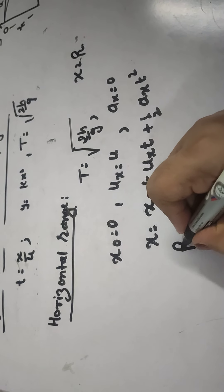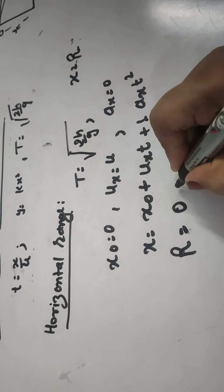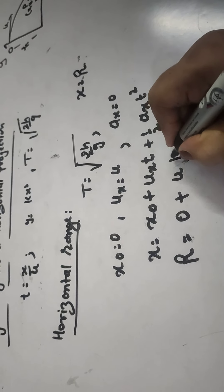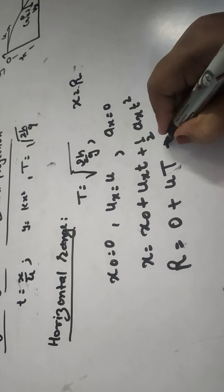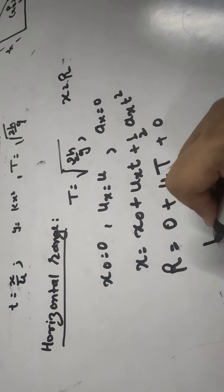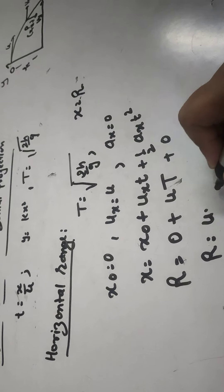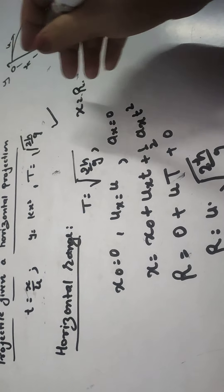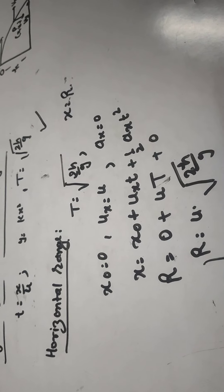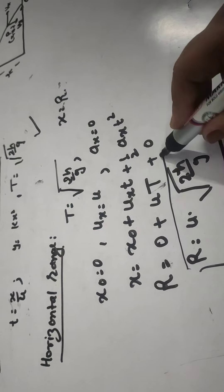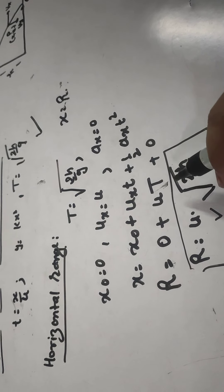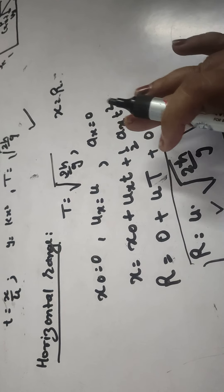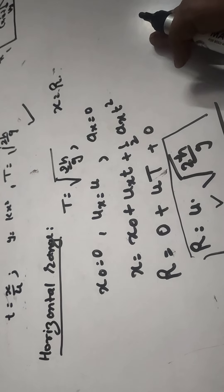So X is R, X₀ is 0, UX is U, T is capital T for the whole time period, plus 0. From this, R = U·T, and since T = √(2H/G), we get R = U·√(2H/G). This is the formula for horizontal range. By substituting initial velocity, height, and acceleration due to gravity, we can find the range of the projectile.